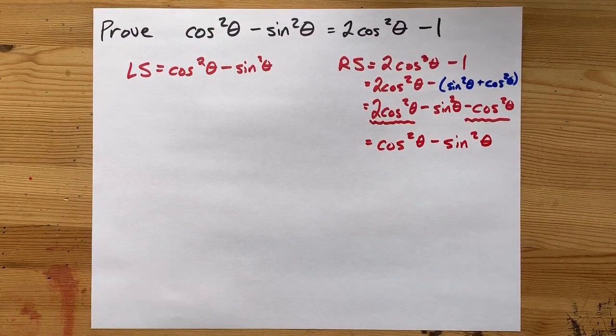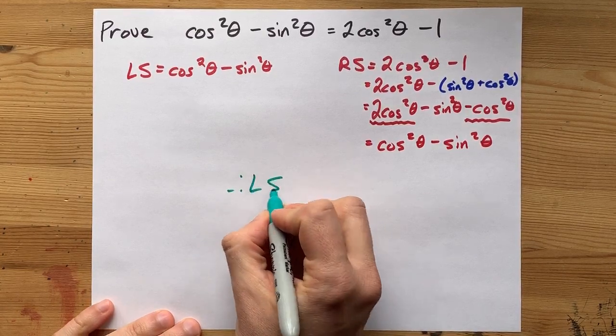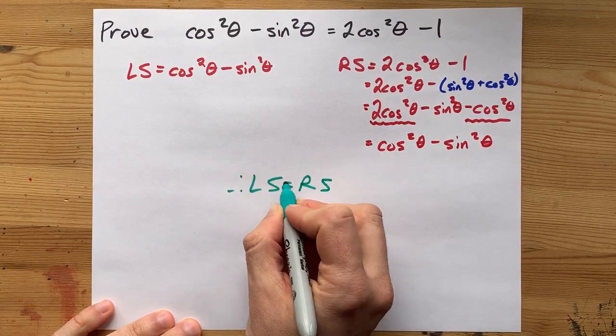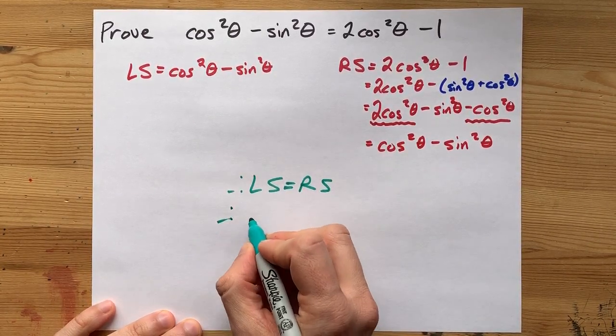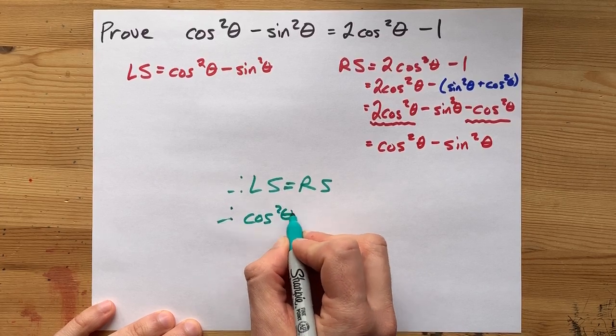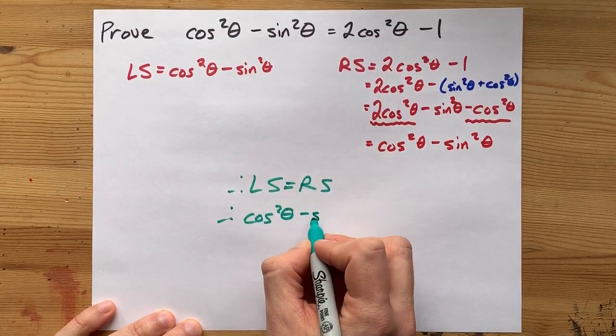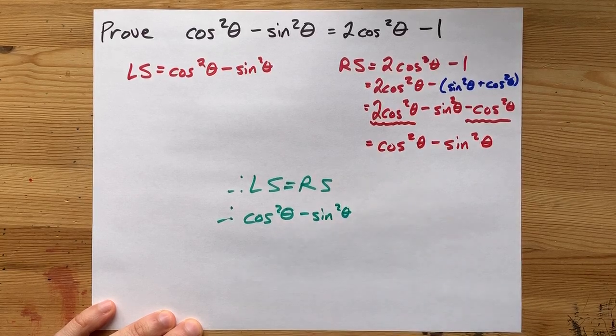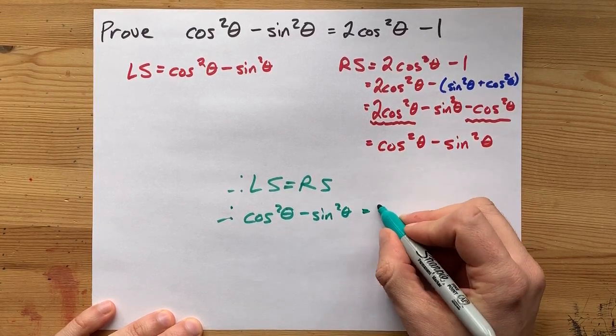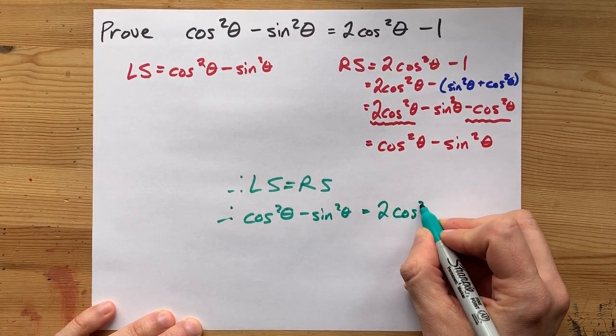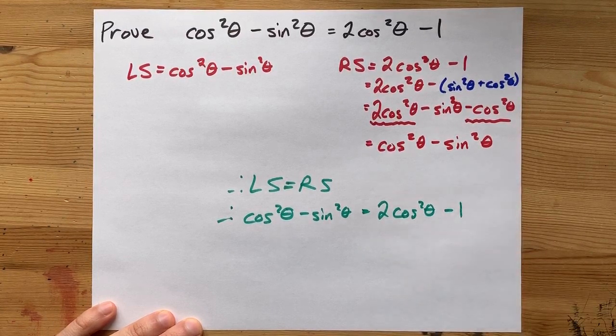Lo and behold, my left and right hand sides match each other. If my left and right hand sides match each other, then that means the identity is true. And the cos squared of an angle minus the sine squared of an angle equals two times the cos squared of an angle minus a full one.